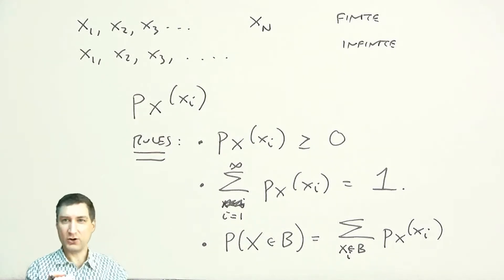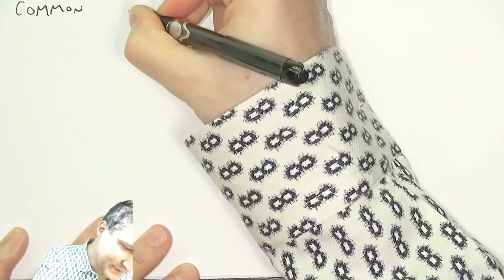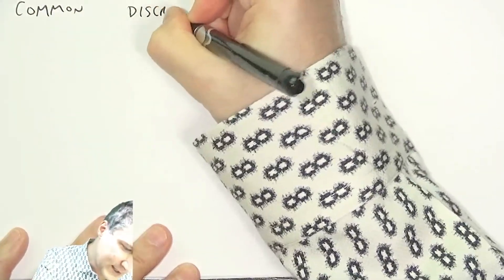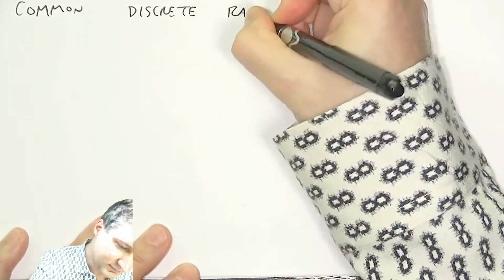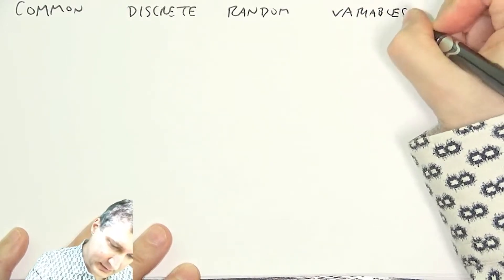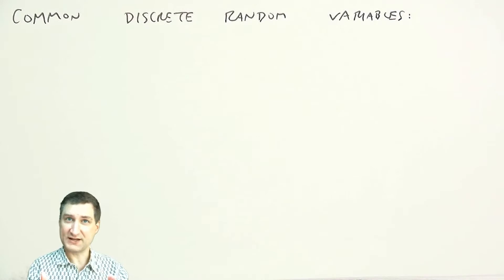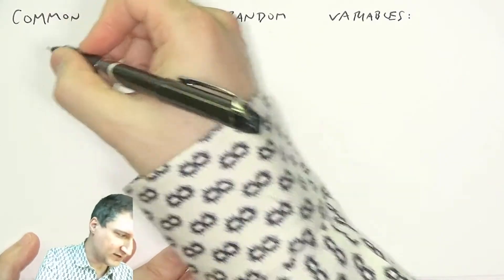So, now, what we can do is we can talk about a bunch of different random variables just by specifying their PMF. And so, what I want to talk about for the rest of this little lecture is common discrete random variables and their corresponding PMFs. So, we already talked about these in slightly different contexts, but now I can really formalize what I mean.